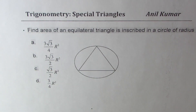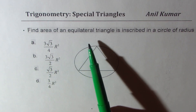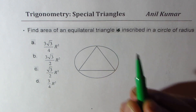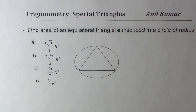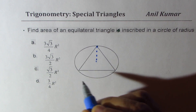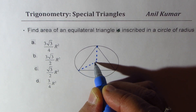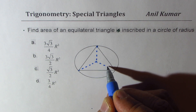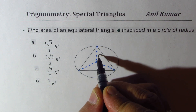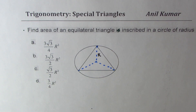We need to find the area of an equilateral triangle inscribed in a circle of radius R. Here is the triangle given within a circle with radius R. The center of the circle is marked, we are given that the radius is R, so you can take the radius side as R.